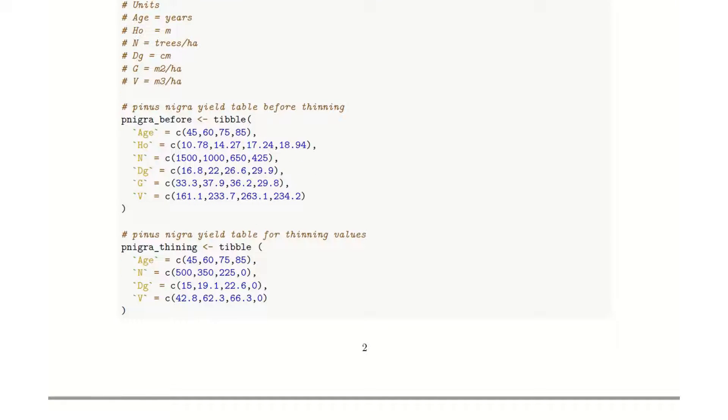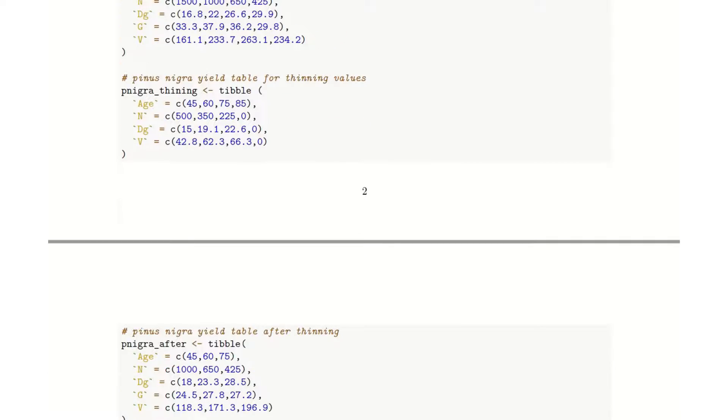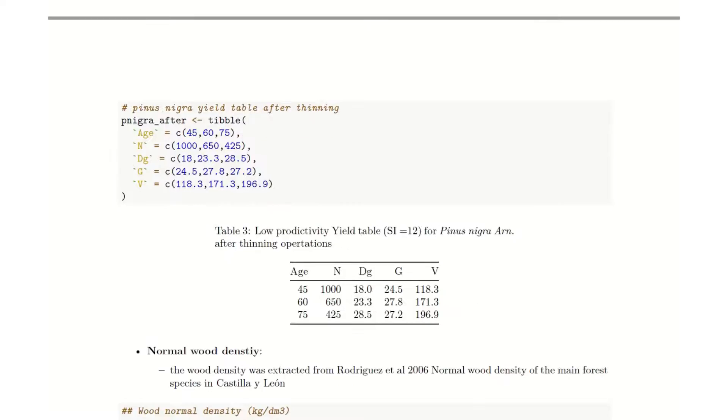Here you can find, for each scenario, a snippet code of the data and how to introduce it into RStudio. As you can see here, in the after thinning scenario, we have three H classes with information about the stand density, the diameter, the mean diameter, the basal area and the volume.